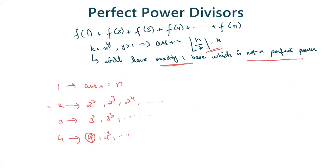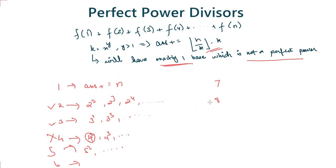For example: 2 is not a perfect power, 3 is not a perfect power, 4 is a perfect power so we skip it, 5 is not a perfect power so we calculate its powers, 6 is not a perfect power, 7 is not a perfect power, 8 is a perfect power (it's 2 cubed) so we skip it, 9 is a perfect power so we skip it, and so on.